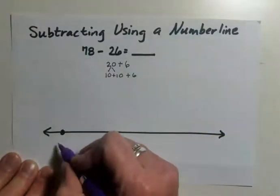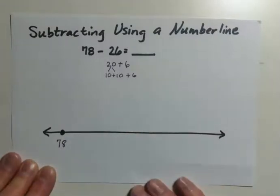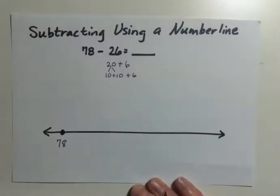I put the first number 78, the larger number at the beginning of the number line, and that makes it easier to subtract.